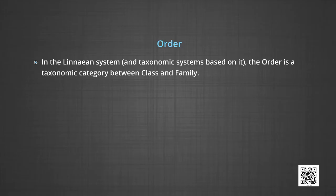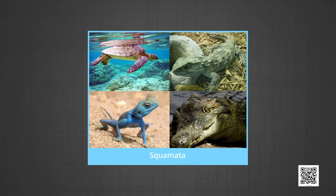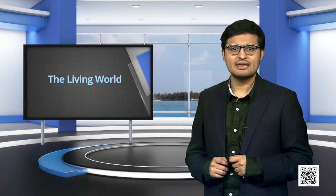In the Linnaean system, the order is a taxonomic category between class and family. An order is a group of organisms — for example, Lepidoptera, Squamata, Primates — that, although differing quite a bit among themselves, still have a degree of characteristics in common. For example, all Lepidoptera (butterflies and moths) have minute scales on the wing, a soft-bodied herbivorous larval form called caterpillar, and a mouth part in the adult specialized for feeding on nectar.